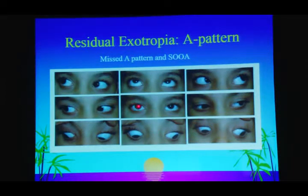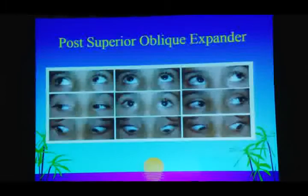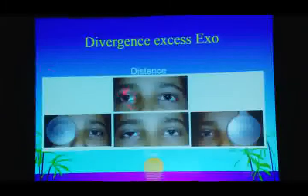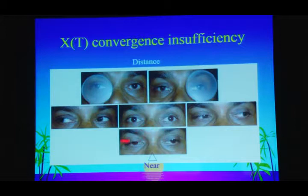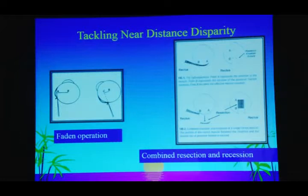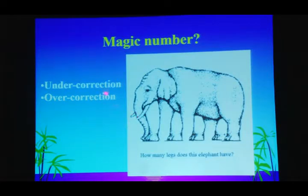This case was operated elsewhere — eyes appear straight in primary position, but on looking up and down the problem remains because the surgeon missed operating on the superior oblique overactions, leaving it for us to correct as a re-operation. There can also be near-distance disparities: divergence excess, convergence insufficiency, convergence excess for esotropia, and divergence insufficiency. You must plan surgery accordingly — for convergence excess, you may need a Farden procedure with recession on the same muscle.